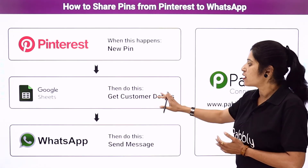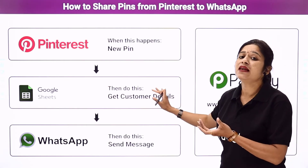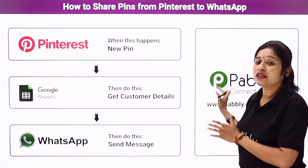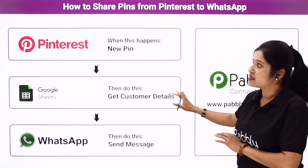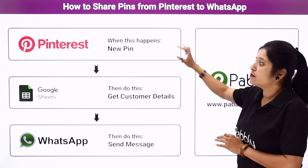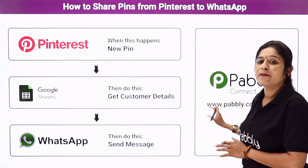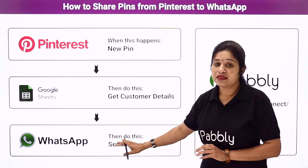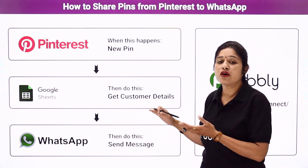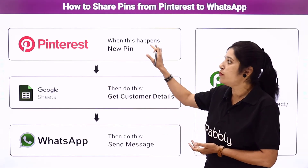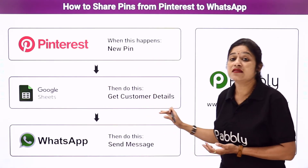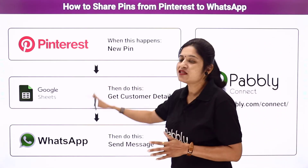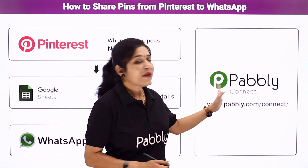First, we have to create an integration between Pinterest and PablyConnect. Then PablyConnect will capture all the details of the pin created in your Pinterest account. Then we create a connection between Google Sheets and PablyConnect, capturing customer details like name, email address and contact number. Using these details we will send a WhatsApp message to the customer saying a new pin has been published.